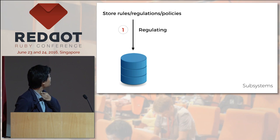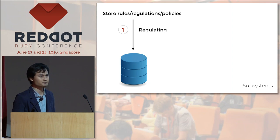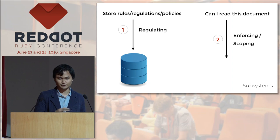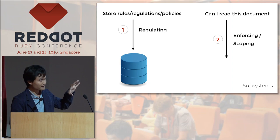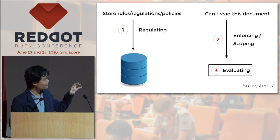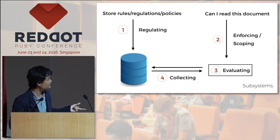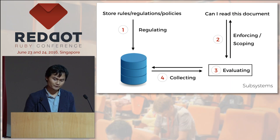I will use a diagram to help you understand this. If we have an application, we have to regulate all of our rules or policies into a database or other data store, or maybe in your source code. You create rules like user A may access X or user B may access Z. After you regulate all your rules into the data store, your application tries to ask the system: can I read this document? The enforcer will go to the evaluating part, which collects all the necessary rules and policies from the database. After that, the evaluating will report back to the enforcing part, which will tell the user whether they may or may not read this document.